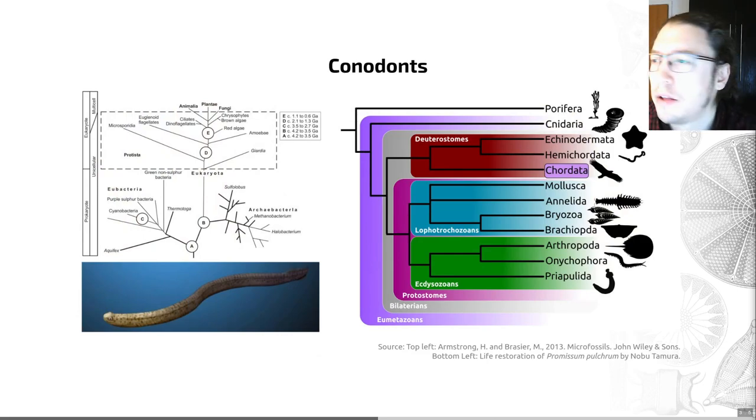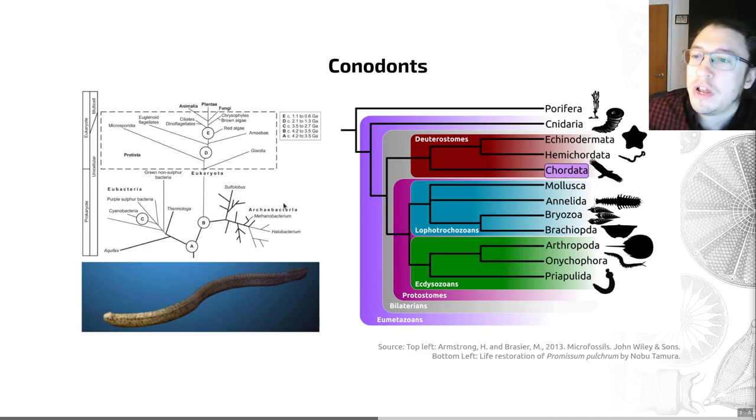But what actually were these things? Well, it's thought that these elements were actually parts of the feeding apparatus of an extinct vertebrate called the conodontophorid. So that means that these are animals.